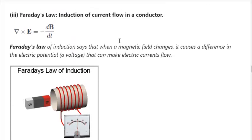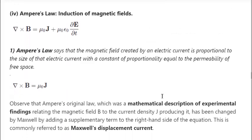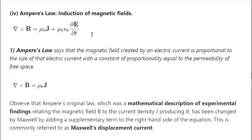Faraday's law is the law of induction of current flow in a conductor, and Ampere's law is the law of induction of magnetic fields. The first part of Ampere's law states that the magnetic field created by an electric current is proportional to the electric current, with a constant of proportionality equal to the permeability of free space. This part says that the magnetic field created by a current is proportional to the current density — the amount of current flowing through the wire per unit time. The permeability is a constant of proportionality, essentially a calibration parameter.